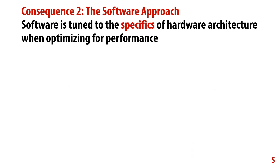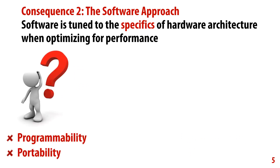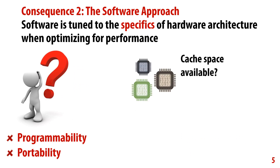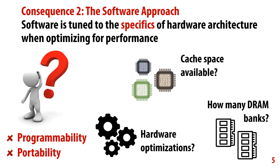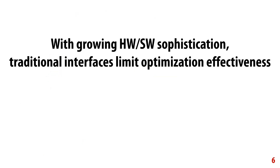The second consequence is that we tune software to the specifics of the hardware architecture when optimizing for performance. This imposes significant portability and programmability challenges when we need to know things like how much cache space is available and what the memory organization is when writing optimized code. With hardware and software getting more and more complex, these traditional interfaces become cumbersome and limit optimization effectiveness.